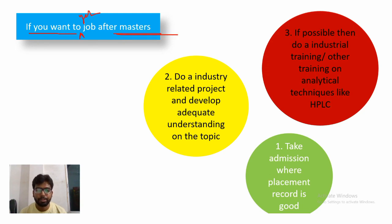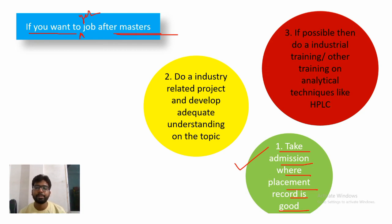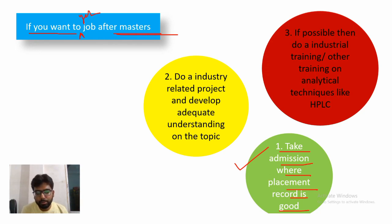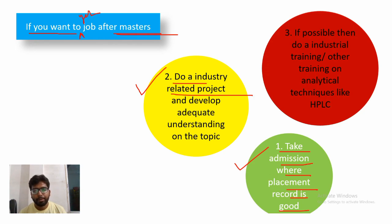If you want to get a job after masters, what should be your strategy? Number one: take admission in a college where the placement record is good. There are colleges like BIT Mesra, BITS Pilani, JSS College — you can go for any of them. Study the past placement records and talk with students and seniors from those colleges before making a decision. If a job is your primary target, go to a college with a good placement record.